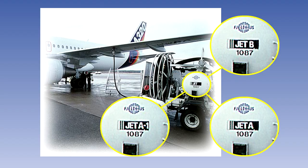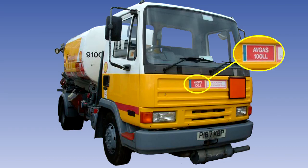Fueling vehicles and hydrants dispensing AVTUR are identified by prominently placed labels with the words Jet A, Jet A1 or Jet B, depending on the grade, printed in white on a black background. Fueling vehicles dispensing AVGAS are identified by prominently placed labels with the word AVGAS and the grade, for instance 100LL, printed in white on a red background.